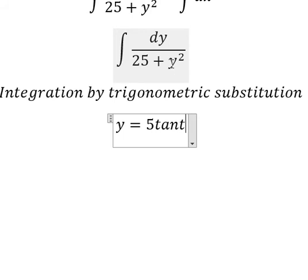We can do factorization: 1 plus tan t squared, we change to secant t squared.